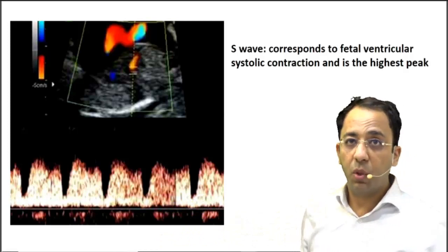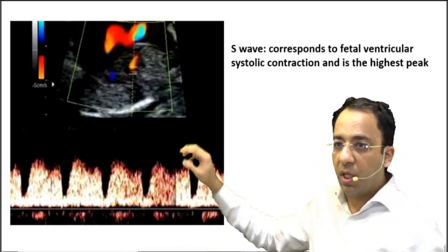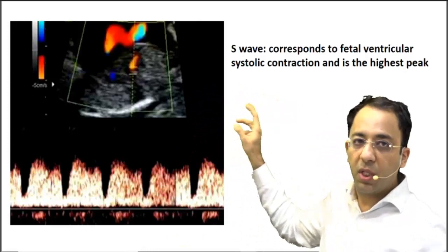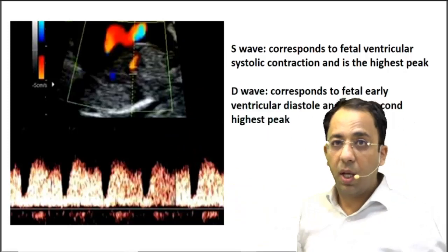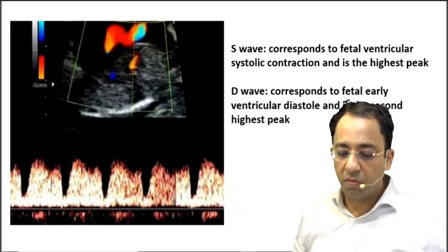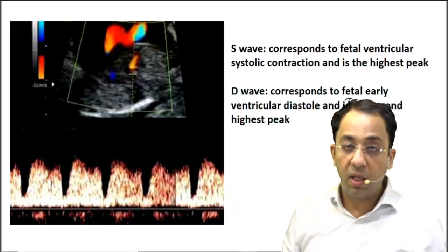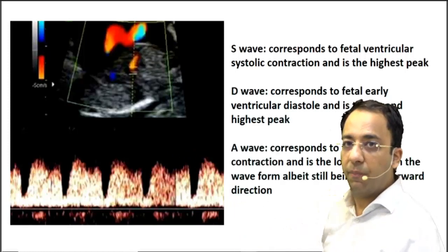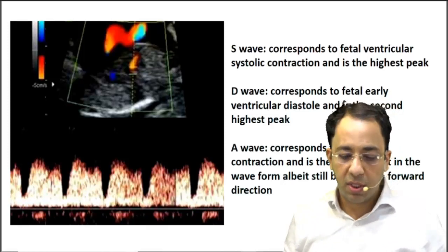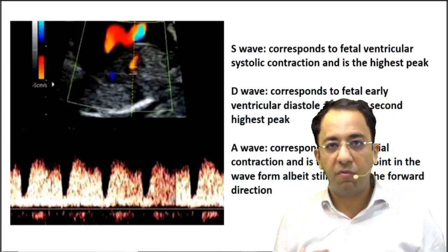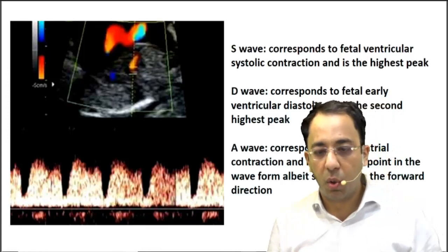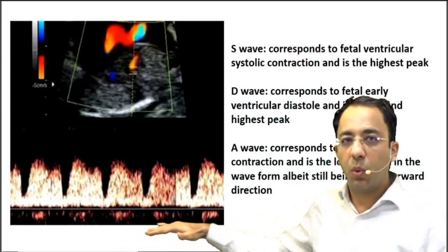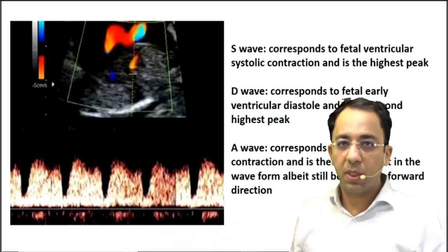The first wave we are looking at is called the S wave. The S wave corresponds to ventricular systolic contraction and is the highest peak. The second is the D wave, which is because of early fetal ventricular diastole and is the second highest peak. Most important for us is the A wave, which is because of fetal atrial contraction. Although it forms the lowest part, it does not touch or go below the baseline.